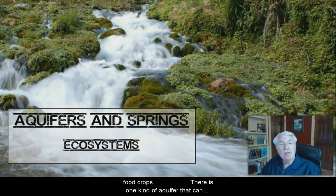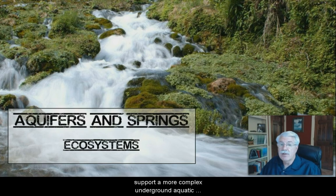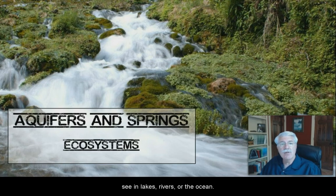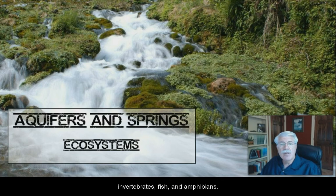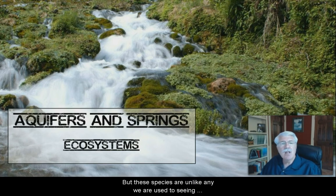Now, there is one kind of aquifer that can support a more complex underground aquatic ecosystem, although life here is very different than what we see in lakes, rivers, or in the ocean. These are the karst aquifers, karst aquifer caves, and underground lakes and rivers. Now, these can support entire ecosystems that include invertebrates, fish, and amphibians, all deep under the ground. But these species are unlike anything we're used to seeing above ground.